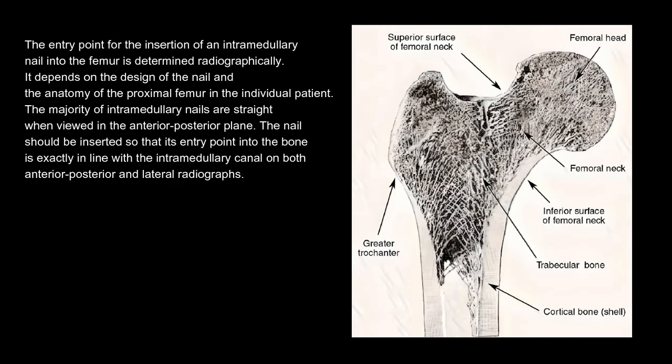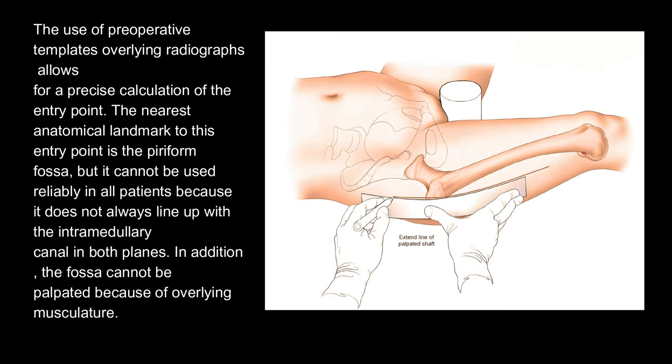The entry point for the insertion of an intramedullary nail into the femur is determined radiographically. It depends on the design of the nail and the anatomy of the proximal femur in the individual patient. The majority of intramedullary nails are straight when viewed in the anterior-posterior plane. The nail should be inserted so that its entry point into the bone is exactly in line with the intramedullary canal on both anterior-posterior and lateral radiographs. The use of preoperative templates overlying radiographs allows for a precise calculation of the entry point.